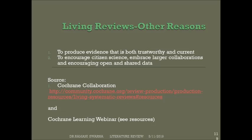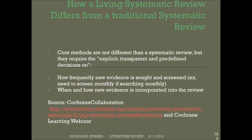There is one more thing to focus on — how Living Systematic Reviews differentiate from the traditional systematic review. Some note that core methods are not different from the systematic review; however, they require explicit, transparent and pre-defined decisions on how frequently new evidence is sought or screened. For example, the need to screen monthly if searching monthly, similar to how websites are updated on a weekly basis. This also covers when and how new evidence is incorporated into the review.